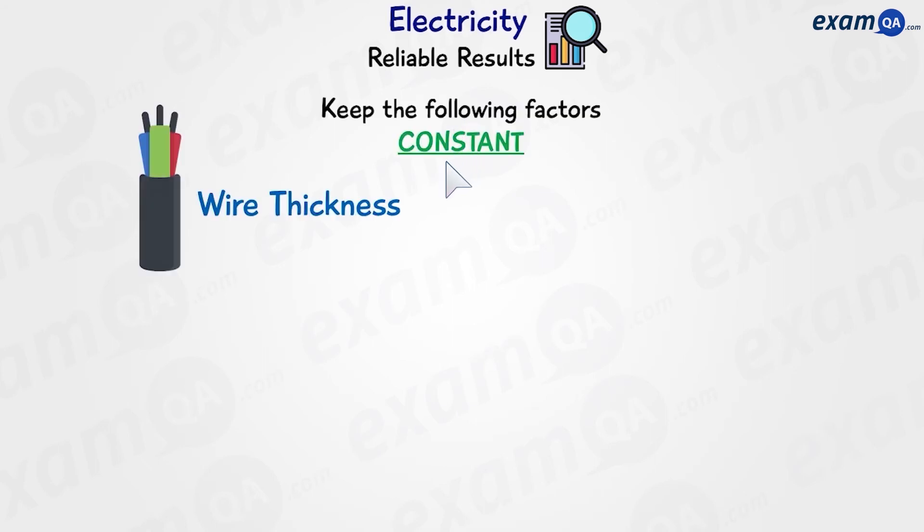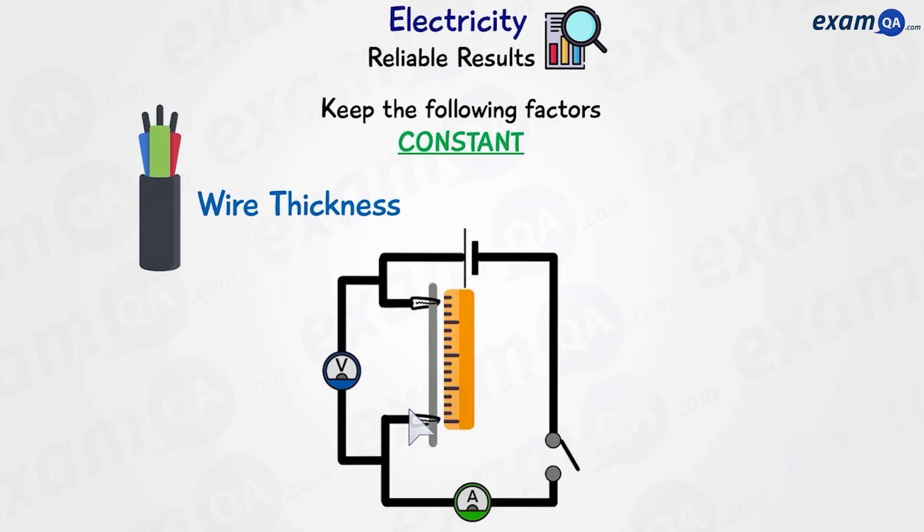How do we get reliable results in this experiment? To make sure that our results are reliable, in other words, the only thing affecting resistance is length of wire, we have to keep the following factors constant. Number one, wire thickness. So we have to make sure that our test wire has the same thickness overall, and we can measure the thickness by using a caliper.